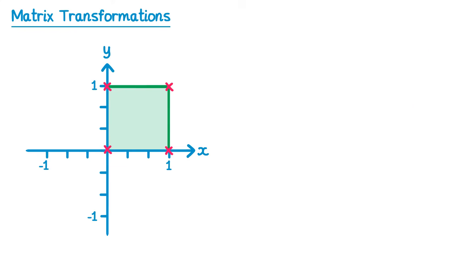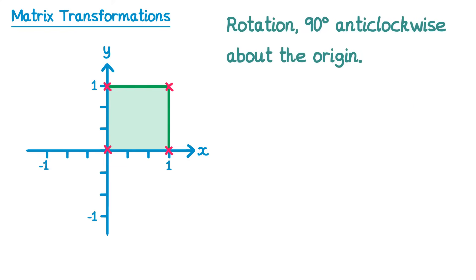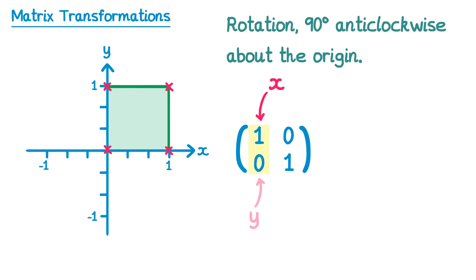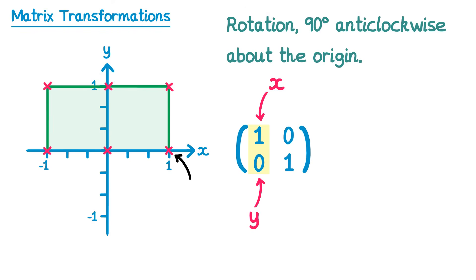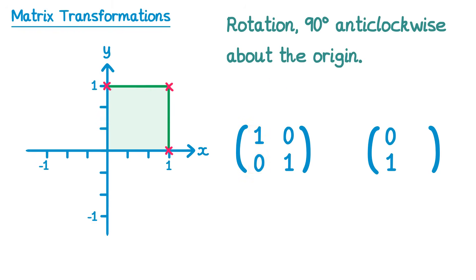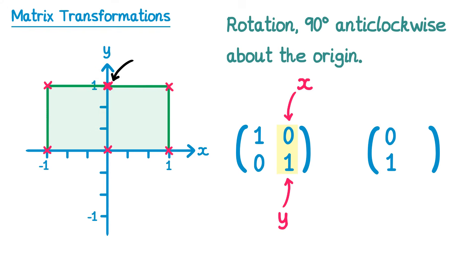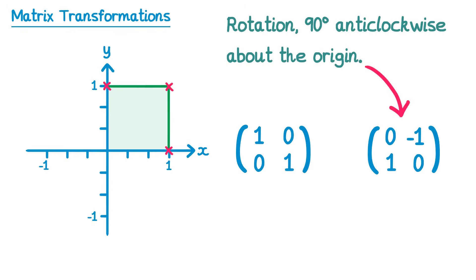Here's a second example: finding the matrix for a rotation 90 degrees anti-clockwise about the origin. Start with the identity matrix. The first column gives the point (1,0). Rotating 90 degrees anti-clockwise, (1,0) maps to (0,1), so write 0 1 in the first column. The second column gives the point (0,1). Rotating that 90 degrees anti-clockwise maps it to (-1,0), so write -1 0 in the second column. The resulting matrix [-1 0; 0 1]... wait — it gives [0 -1; 1 0], which is indeed the correct matrix for this transformation.